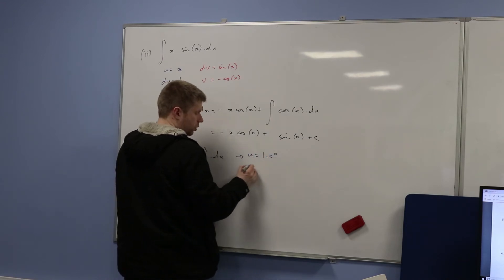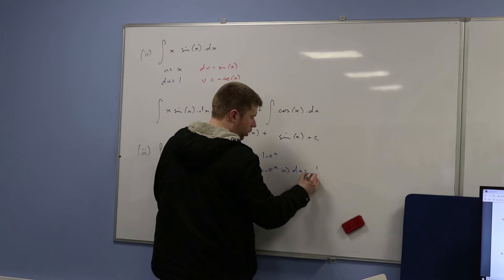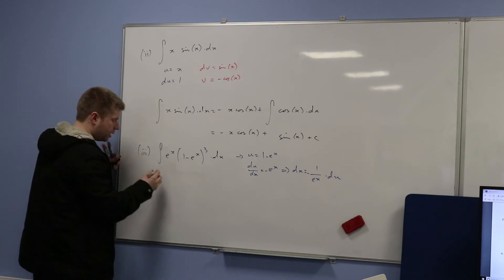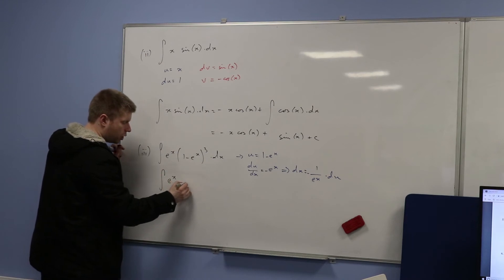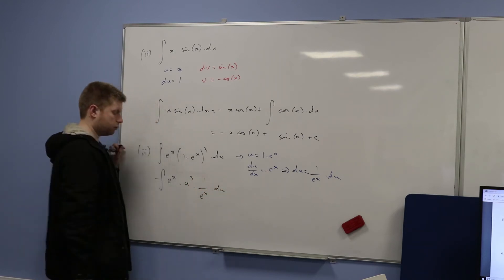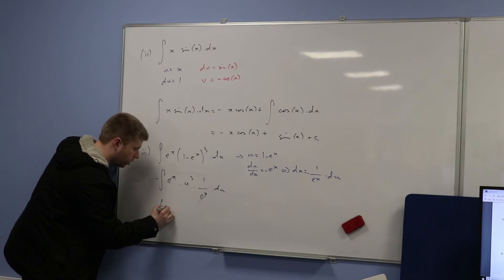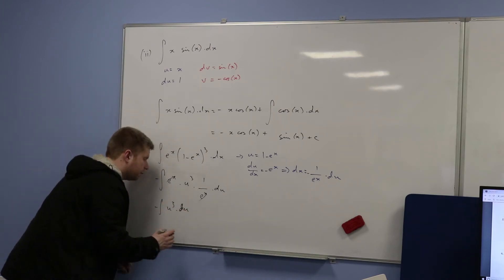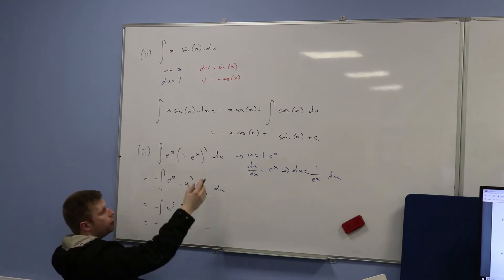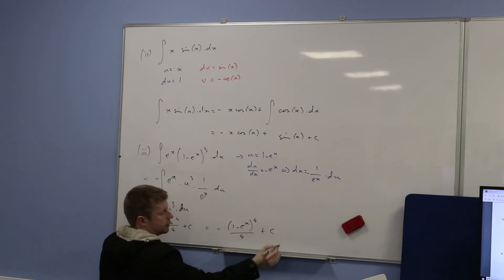Let u equal (1 − eˣ), which means du/dx equals negative eˣ, so dx equals −1/eˣ du. Substituting in: the integral of eˣ · u³ · (−1/eˣ) du — the eˣ cancels. This becomes the negative integral of u³ with respect to u, which is nice and easy. Back-substituting for u gives negative (1 − eˣ)⁴ divided by four, plus c.